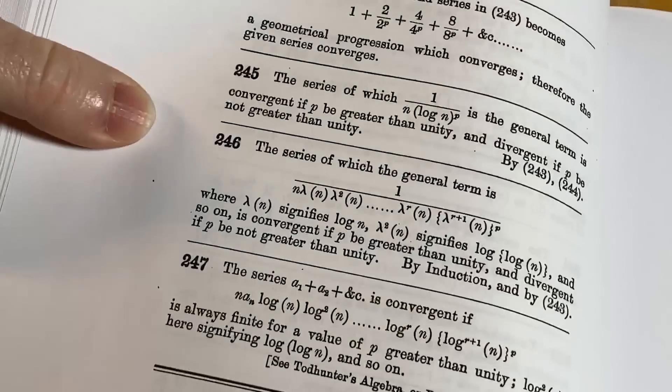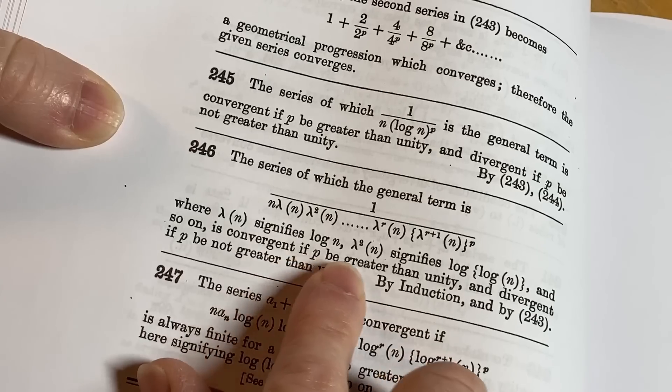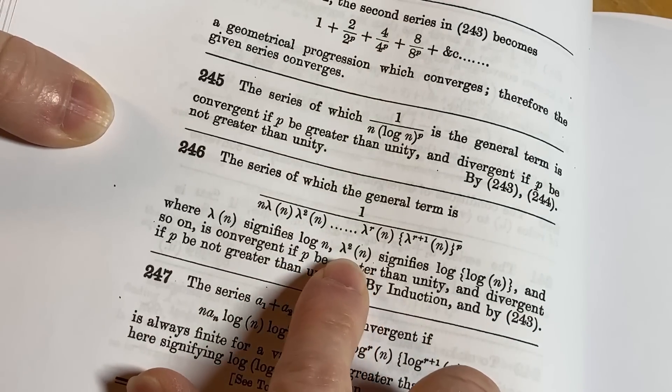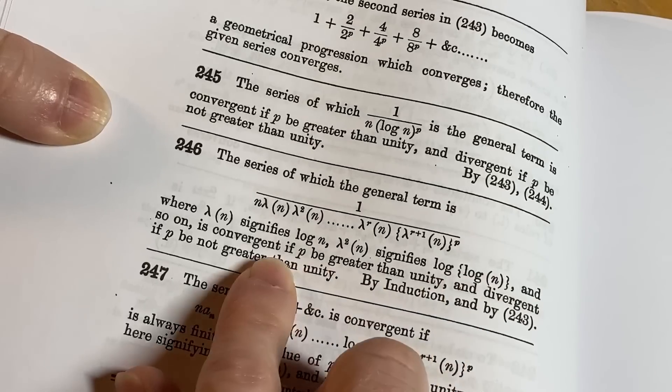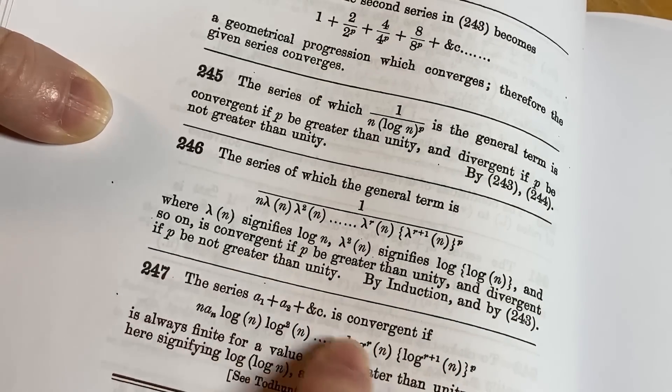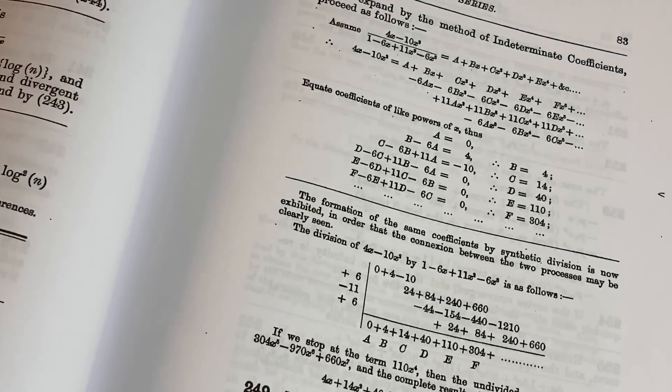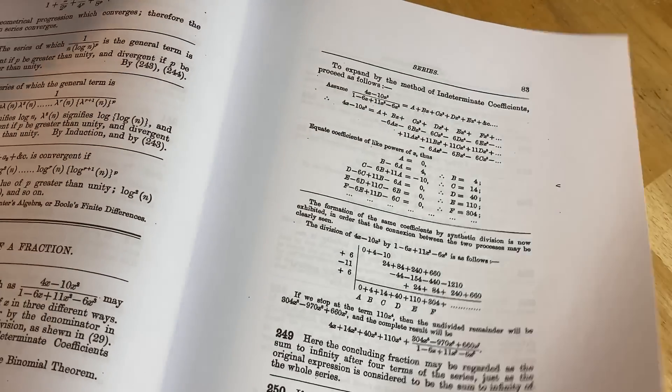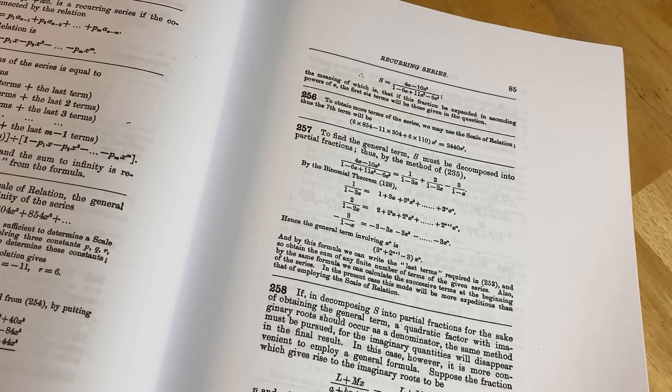What's this? The series of which the general term is, look at this. Lambda of n signifies log of n. Oh, wow. Lambda squared of n signifies the log of the log of n. So it's like function compositions. Wow. Where do you even learn this stuff, right? Like where do you even see math like this? Certainly not in - you go to college and you take your algebra classes and you take your trig classes.